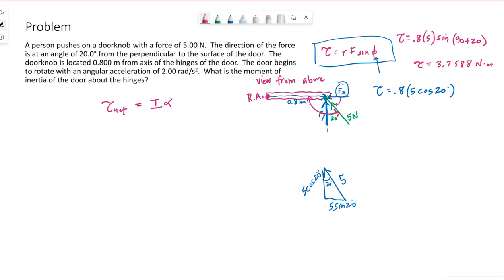Our torque ends up being 3.7588 newton meters. That is the net torque, so if we come back to Newton's second law for rotation, they've told us the angular acceleration is 2 radians per second squared. So I will be the 3.758 divided by 2, I have 3 sig figs, so 1.88.